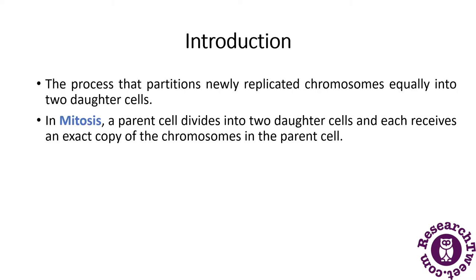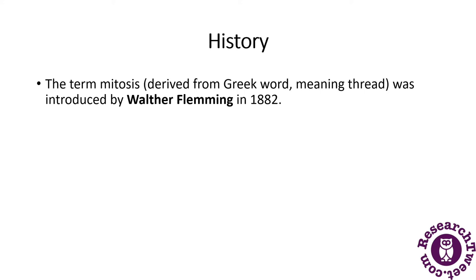Mitosis is the process that partitions newly replicated chromosomes equally into two daughter cells. In the process of mitosis, a diploid cell is converted into two daughter cells. A parent cell divides into two daughter cells, and each receives an exact copy of the chromosomes present in the parent cell.